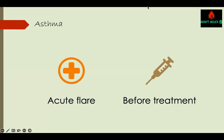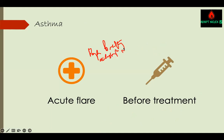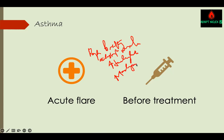Asthma can present in acute form. Most of the time in an acute flare, the patient will present with rapid labored breathing — breathing really fast. They will use accessory muscles to help take air into the lungs. They may be tachycardic because they're very anxious, and they may be tachypneic from all the obstruction going on.